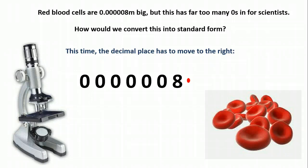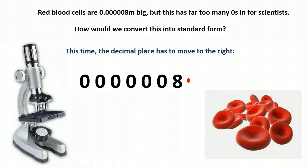So it's moved 6 lots of a magnitude, or 6 lots of multiplying by 10. And because we're going to be making it as a very, very small number, we use a minus sign to signify that.